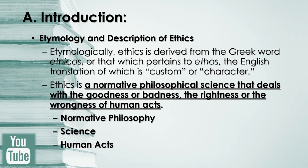Let's begin with the etymology and description of ethics. When we say etymology, we are talking of the origin of the word and the historical development of its meaning. Etymologically, ethics is derived from the Greek word 'ethicos,' or that which pertains to 'ethos,' the English translation of which is custom or character. Ethics is a normative philosophical science that deals with the goodness or badness, the rightness or the wrongness of human acts.